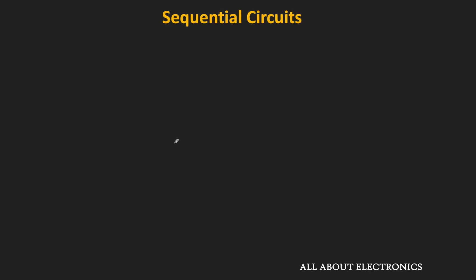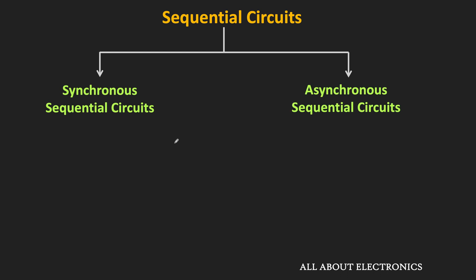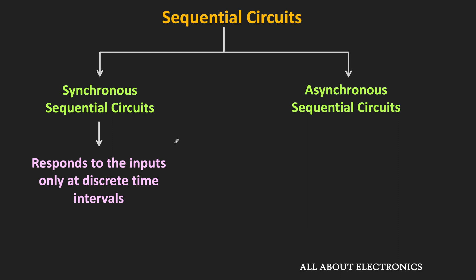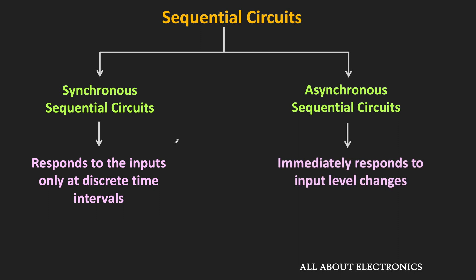There are two types of sequential circuits: synchronous and asynchronous. In synchronous sequential circuits, the circuit responds to the input only at discrete intervals of time. In asynchronous sequential circuits, the circuit immediately responds to any input level change.